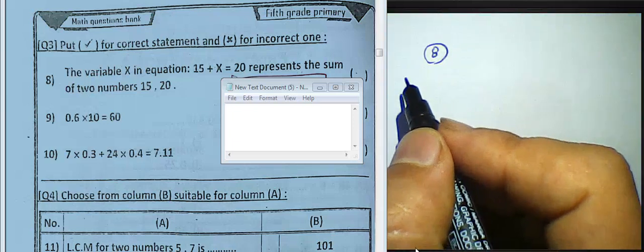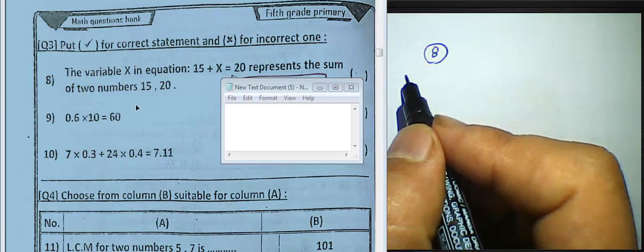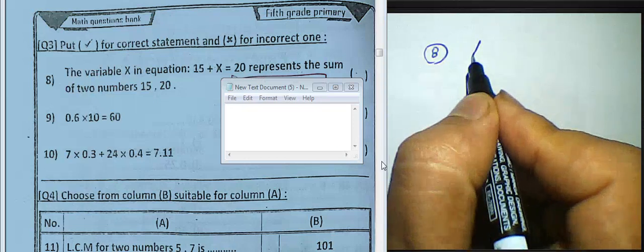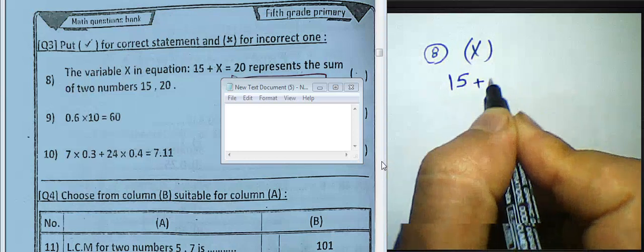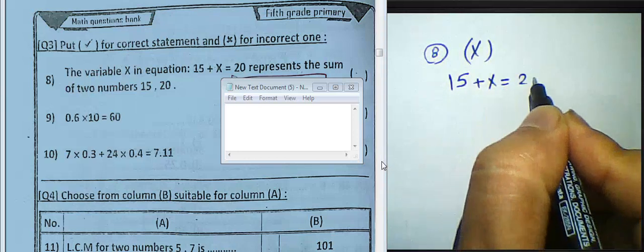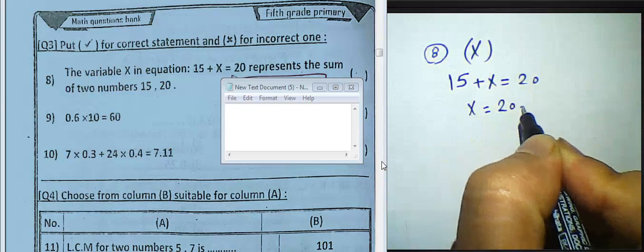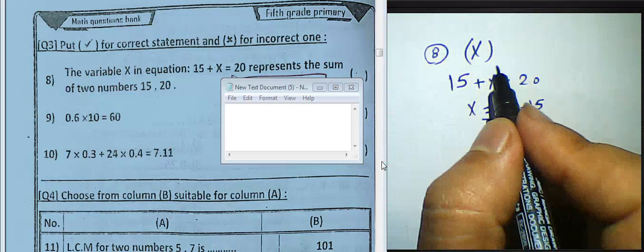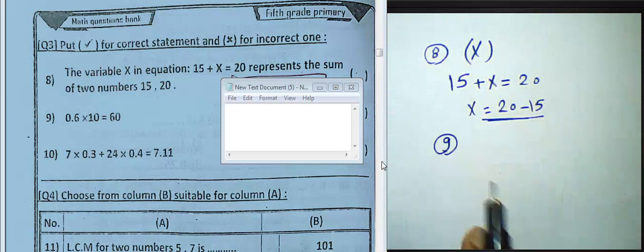Question 8: the variable x in the equation 15 plus x equals 20 represents the sum of two numbers 15 and 20. This is False. Because in 15 plus x equals 20, the variable x represents the difference between 20 and 15, not their sum. So the answer is False.